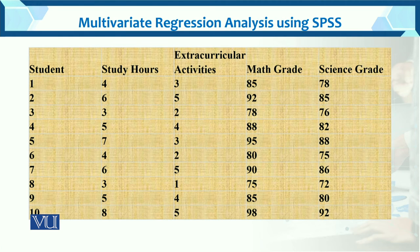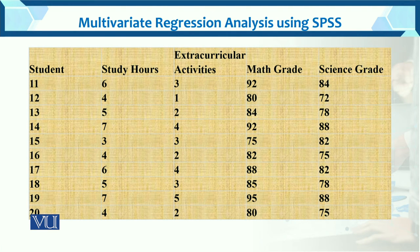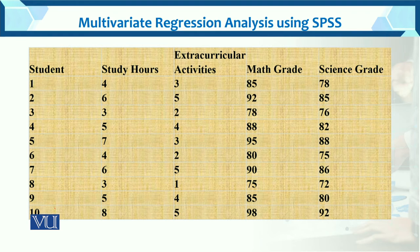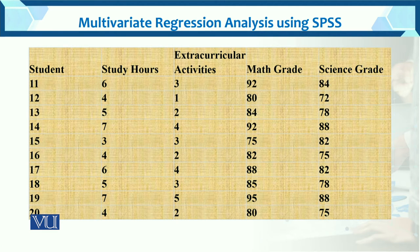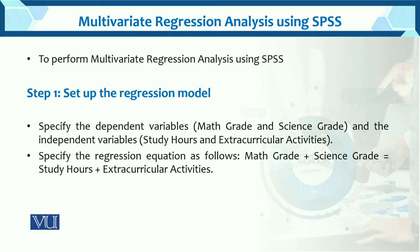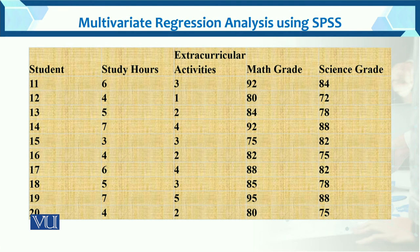Here is the data. We have a total of 20 students. The variables we have are study hours, extracurricular activities, math marks, and science marks. Basically, grade means marks. This is multivariate data because there are two dependent variables and two independent variables.